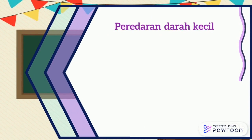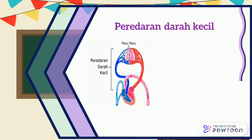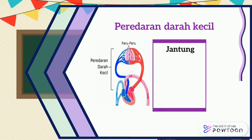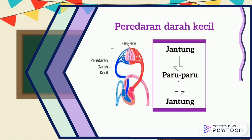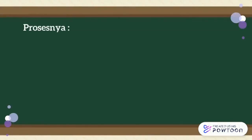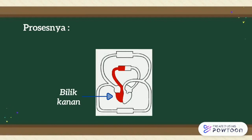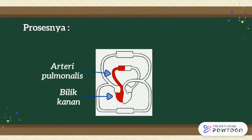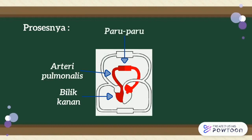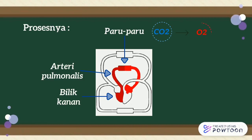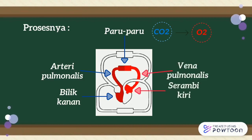Peredaran darah kecil adalah peredaran darah yang dimulai dari jantung ke paru-paru, kemudian kembali lagi ke jantung. Pada prosesnya, darah dari bilik kanan yang mengandung karbon dioksida menuju ke arteri pulmonalis, selanjutnya masuk ke paru-paru. Pada paru-paru akan terjadi pertukaran antara karbon dioksida menjadi oksigen. Oksigen akan menuju ke vena pulmonalis, lalu masuk ke serambi kiri.